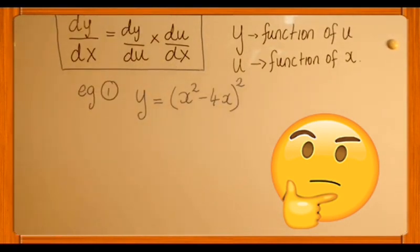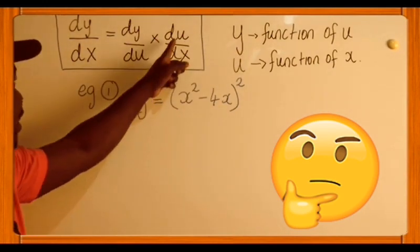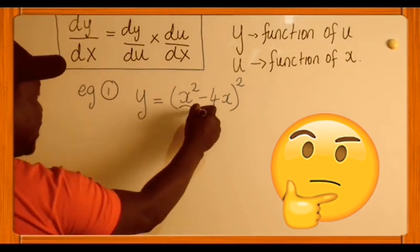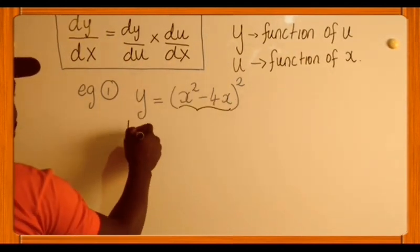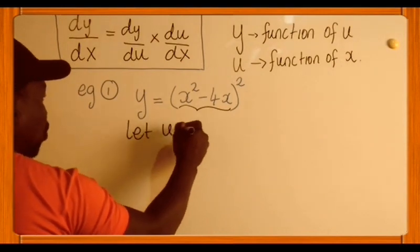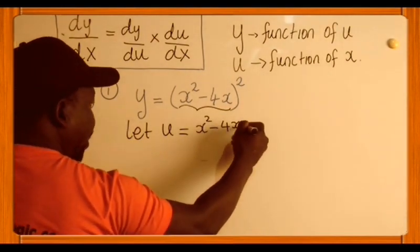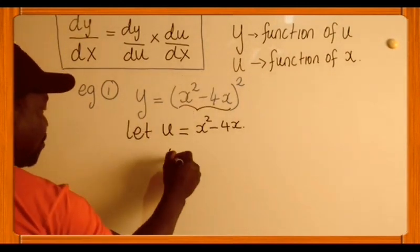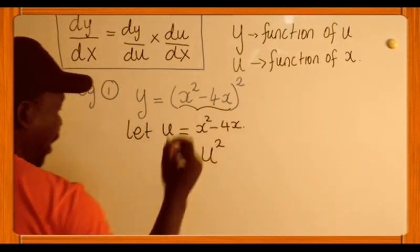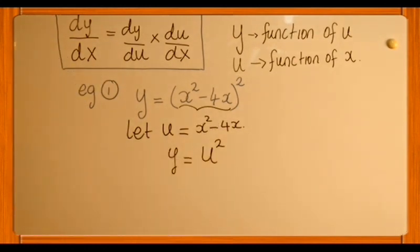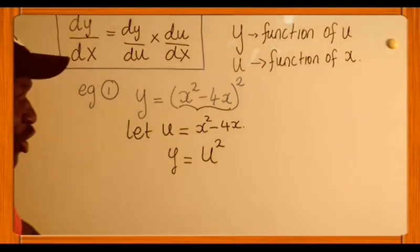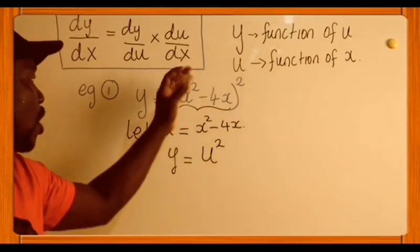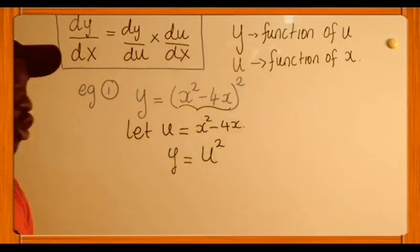This is our main formula for the chain rule: y is a function of u, and u is a function of x. Looking at that, we can let u be equal to x squared minus 4x — we've let u be the inside function. If this is u, it means y is equal to u squared. This is the first important substitution: u is the inside function. u is a function in x, and y is a function in u.